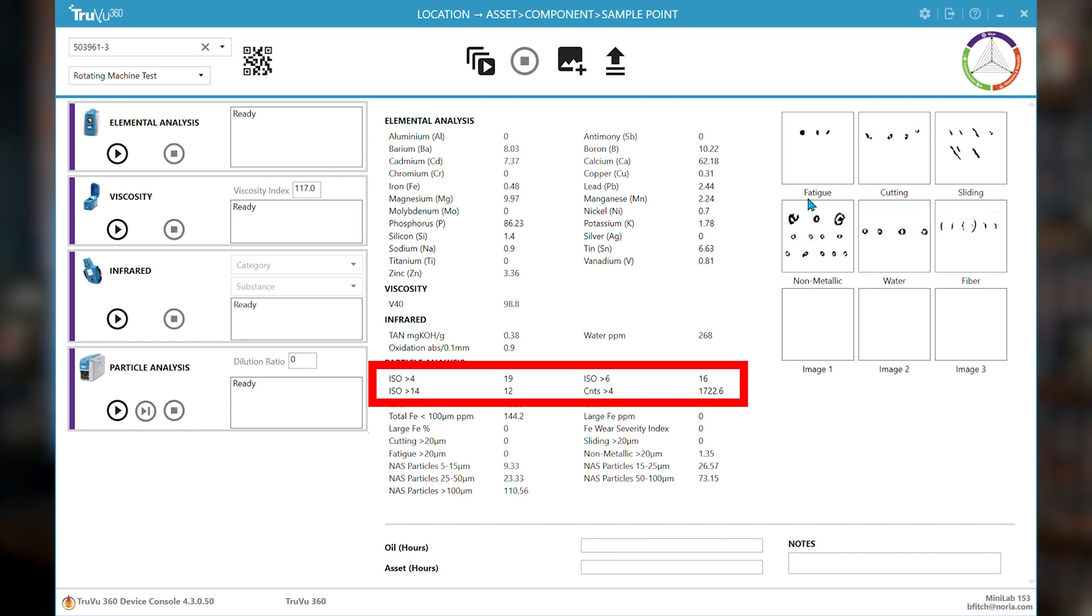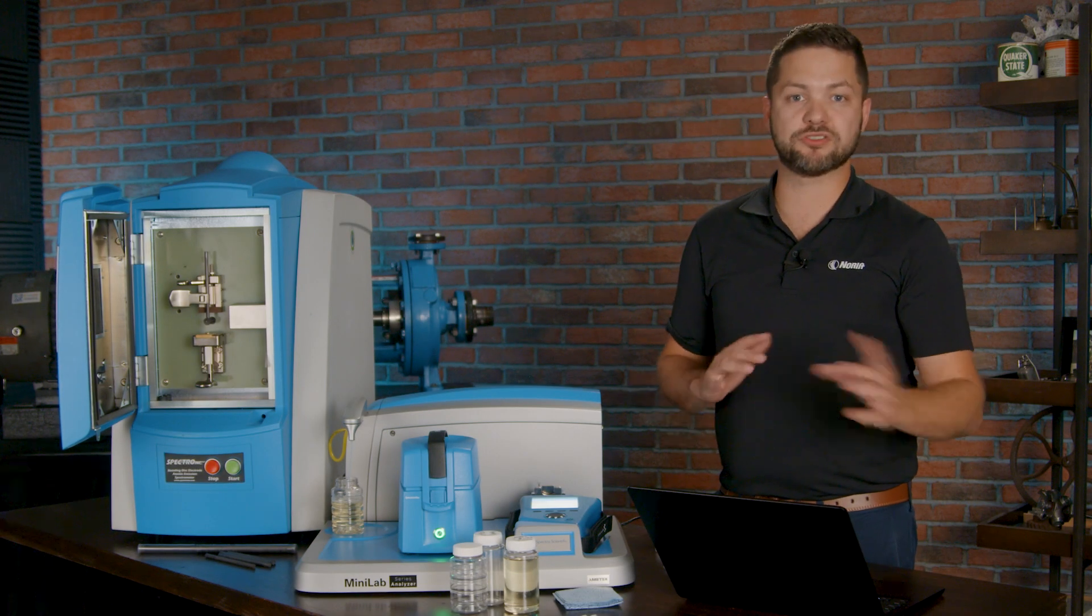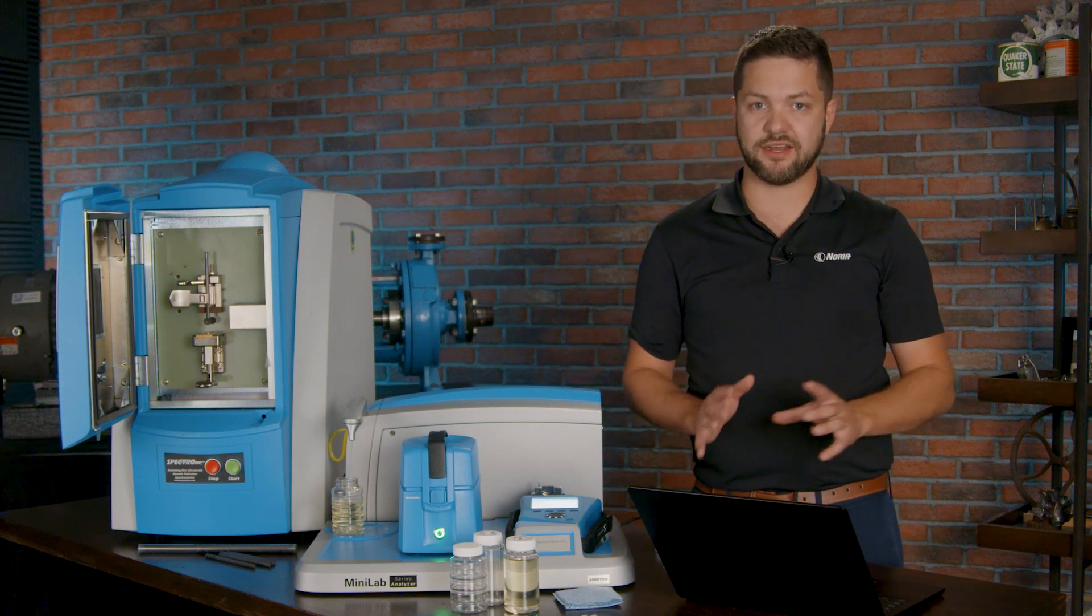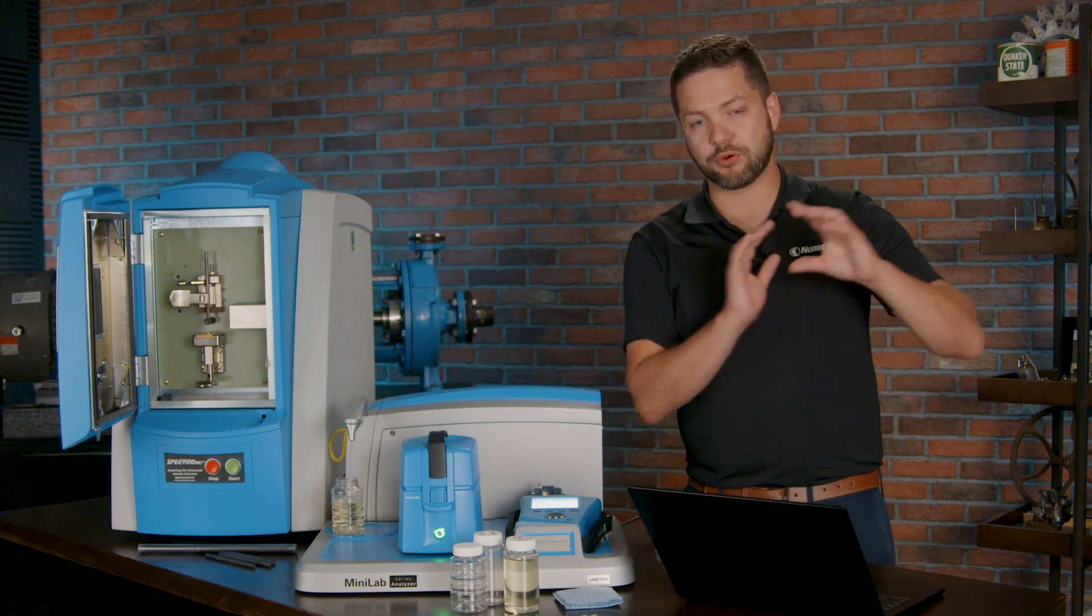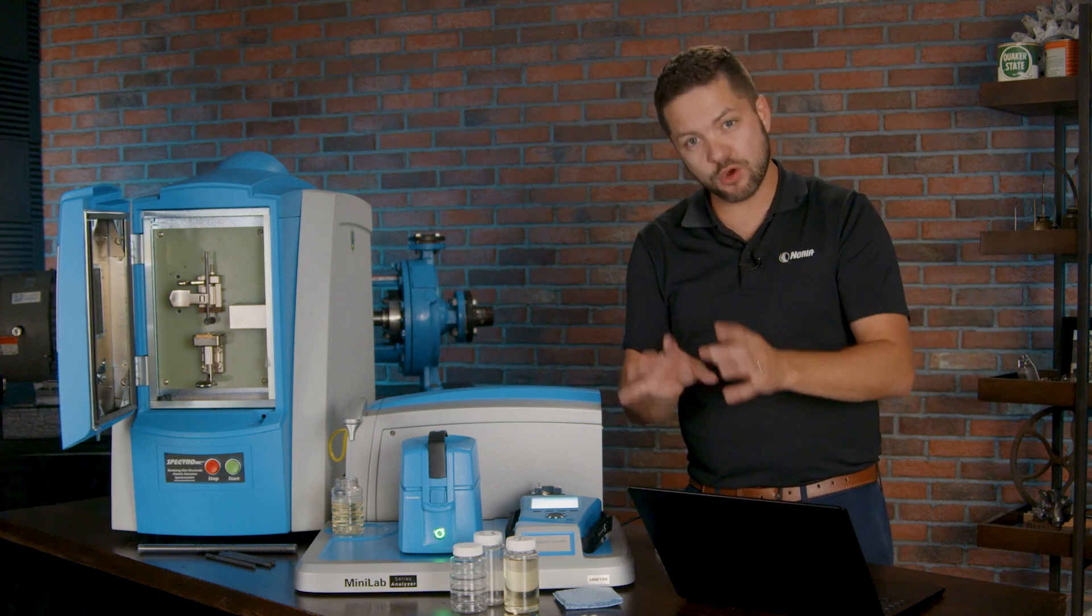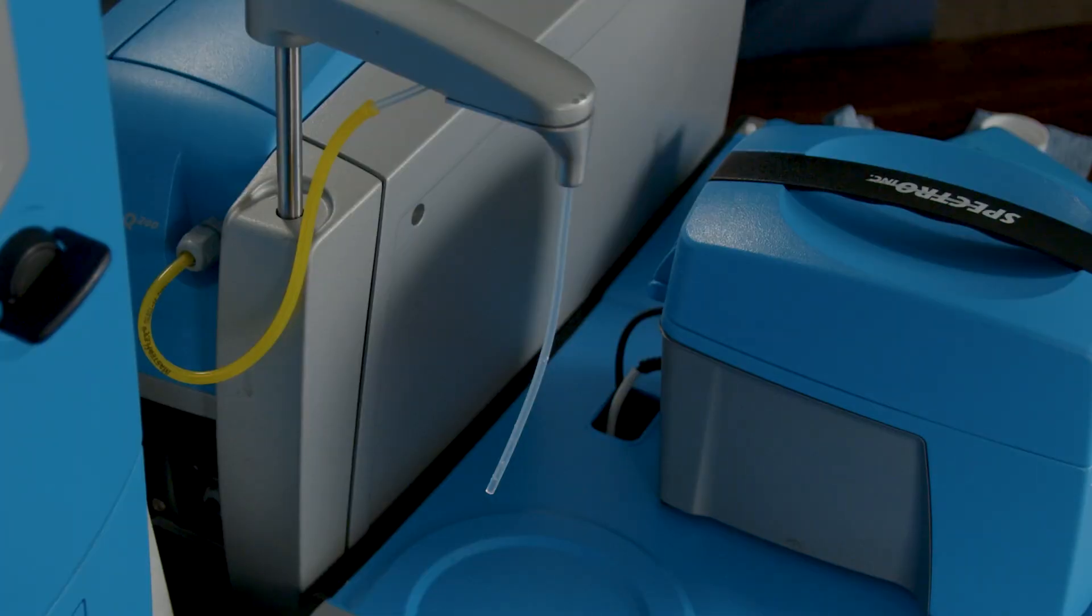But you also get these images. You see images showing you a bit of the fatigue, the cutting, the sliding, the non-metallic, the potential for water and the oil, water droplets, fibers, and there's more. It categorizes the various particles that it sees in here so that you know what potential wear mode is occurring. This is very important from the analysis side of the oil analysis so that you can properly figure out what the problem is. Not just get data, not just detect that there is a problem, but know what the possible problems are on the machine. So that's very important here with the laser net finds.